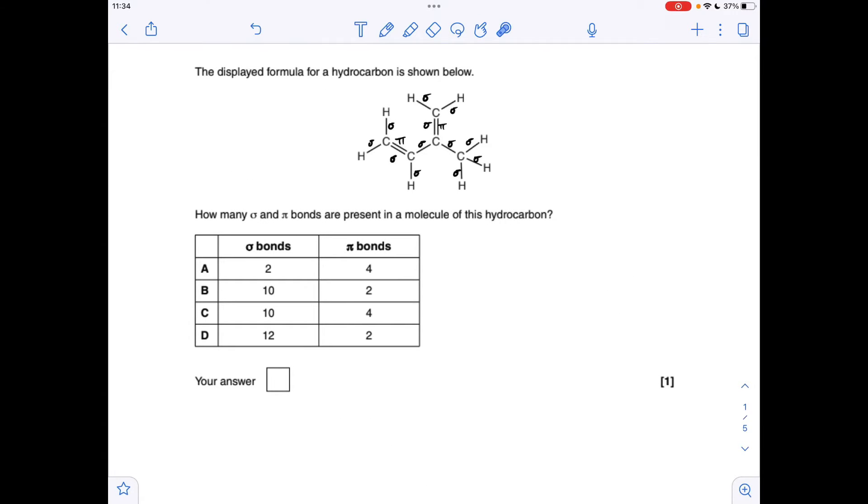Moving on to the next question, how many sigma and pi bonds are in this hydrocarbon? You'll notice I've already identified the sigma and the pi bonds. The important thing to know is that in a C=C double bond, you've got a sigma and a pi bond. So there's a total of two pi bonds in the molecule, which obviously rules out options A and C. Then all the single bonds, these are all sigma bonds, but remember you've also got a sigma bond as part of the double bond. So it was 12 sigma and 2 pi, so the answer was D.